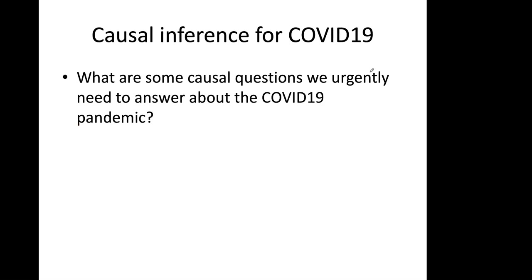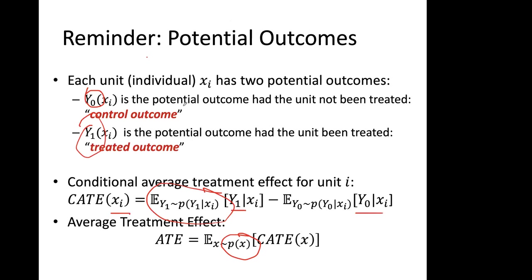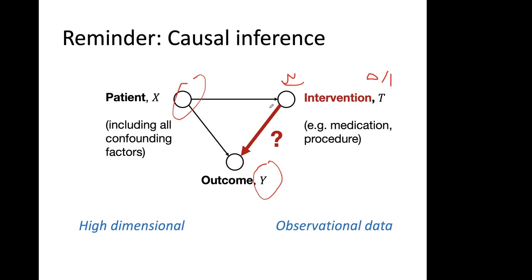I want to take this opportunity to think bigger picture about how causal inference can be important in a variety of societal questions — specifically, what causal questions we urgently need to answer about the COVID-19 pandemic. As you think through these questions, keep this causal graph in mind: there is a general population, some action you want to perform, and the whole notion of causal inference is assessing the effect of that action on some outcome of interest. Try to frame your answers in terms of X, T, and Y.